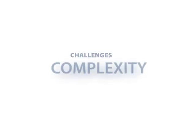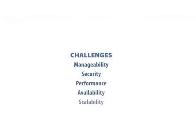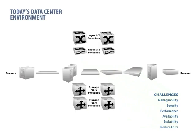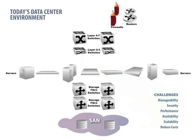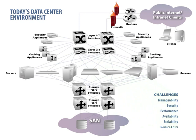Today's computing environments are complex, hard to manage, and even harder to secure. CIOs are struggling to improve performance, availability, and scalability, while remaining flexible and reducing costs. Despite the many benefits delivered by open systems, data centers are littered with specialty equipment — servers, LAN and SAN switches, storage arrays, enterprise routers, and a myriad of function-specific appliances. Cabling these components is a lot like a massive spider web.